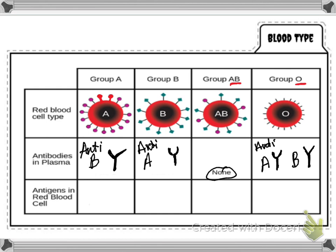So what kind of antigens are on the red blood cells? Well, if I'm A, then my antigens are A. And if I'm B, then my antigens are B. If I'm AB, then I have both A and B — and you can see that on the blood cell. O will not have any of those. Now remember, our H factor is a little bit different.